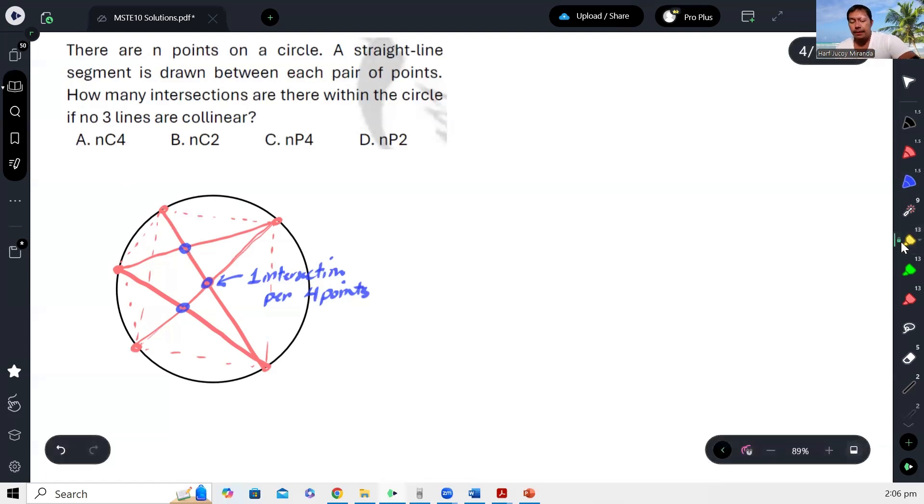So ganito yan. Kung titignan, kung mag-focus lang tayo sa kada intersection, itong intersection na to ay nabuo gawaan itong apat na points na to, okay? Tapos itong intersection na to, nabuo gawaan yung apat na points na to, itong dalawa tapos itong dalawa, okay?